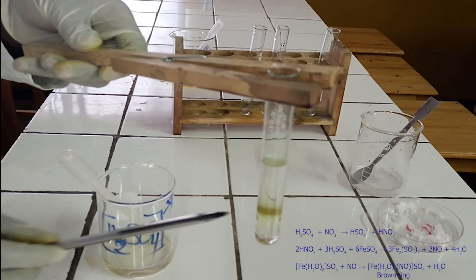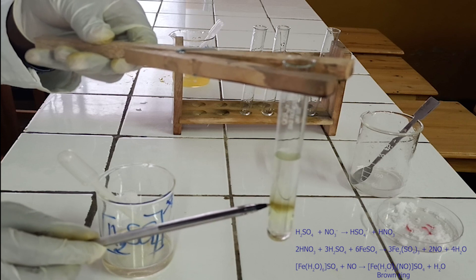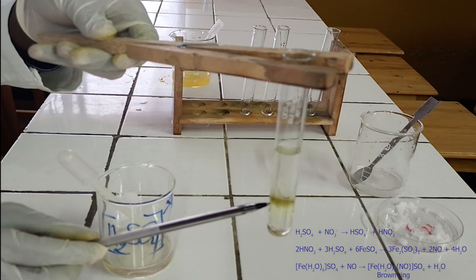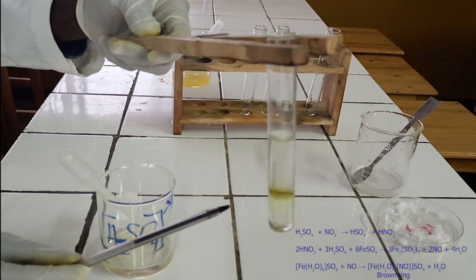When concentrated sulfuric acid is added to a solution of iron-2-sulfate and a possible nitrate, the acid sinks to the bottom. This is due to the fact that concentrated sulfuric acid is denser than the solution.